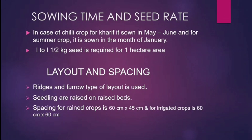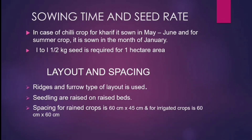Sowing Time and Seed Rate. In the case of Chilli crop, for Kharif it is sown in May to June, and for summer crop it is sown in the month of January. 1 to 1.5 kg of seed is required for 1 hectare area. Layout and Spacing — ridges and furrow type of layout is used. Seedlings are raised on raised beds. Spacing for rainfed crops is 60 cm x 40 cm and for irrigated crops is 60 cm x 60 cm.